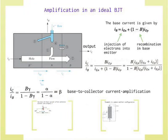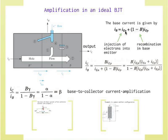We can briefly introduce additional parameters. To understand amplification in an ideal BJT, we look at the base current, which has two components: electron injection into the emitter (IEN) plus recombination in the base — which equals one minus B times IEP, since B times IEP is all the holes that cross. Whatever does not make it across recombines.